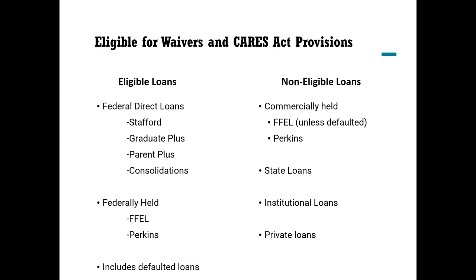After 2010, Congress ended the FFEL program, so no new FFEL loans were made. Except for a tiny population of Perkins loans, all federal student loans made after 2010 fall under the direct loan program. If you have loans made before 2010, figuring out whether you have a FFEL or direct loan can be really hard because both have Stafford, graduate plus, parent plus, and consolidation loans. While all direct loans are eligible for the COVID waivers, only a very small percentage of FFEL and Perkins loans — essentially those sold back to the Department of Education — are eligible. If your interest rate currently shows 0%, your loans are eligible for the waivers.